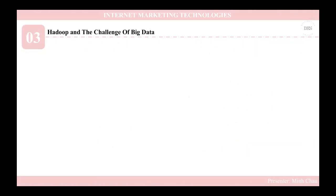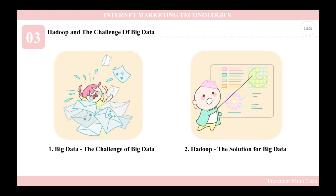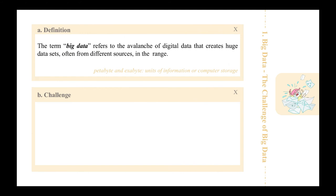In the third part on internet marketing technologies, I would like to tell you about Hadoop and the challenge of big data. Big data refers to the avalanche of digital data that creates huge datasets often from different sources. The challenge is that the volume of data is so large that traditional database management systems cannot capture, store, and analyze the data in a reasonable time. For example, analyzing 100 million emails to place appropriate ads, or 500 million records to find patterns of fraud and churn.